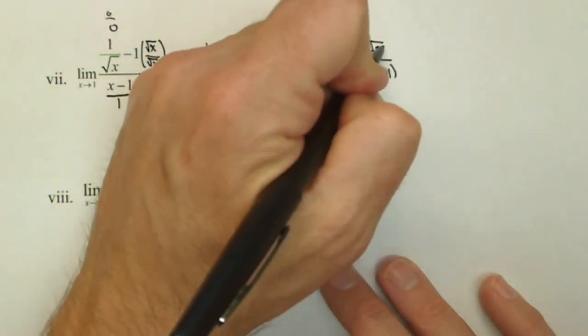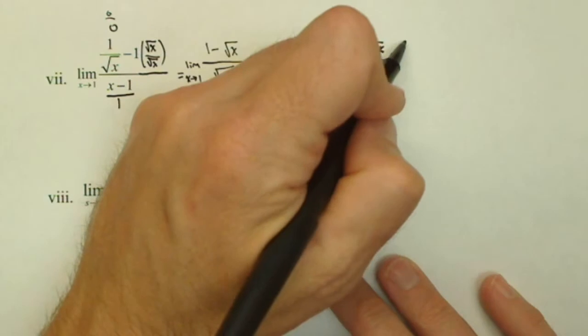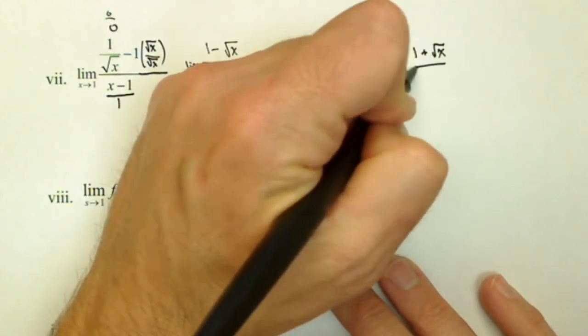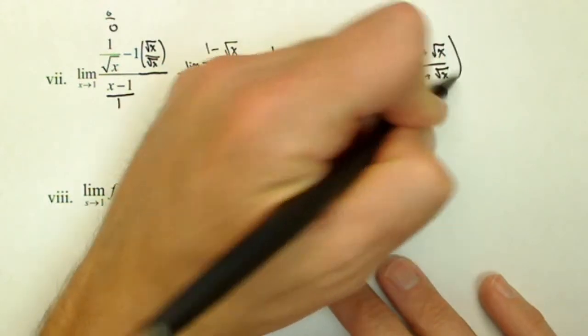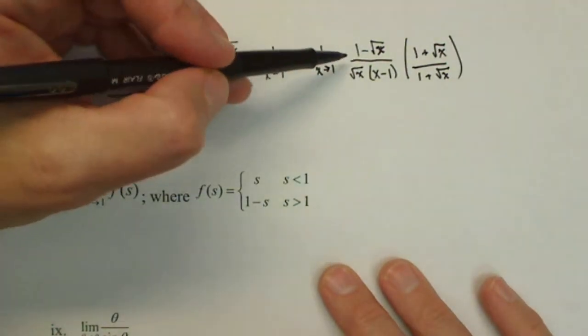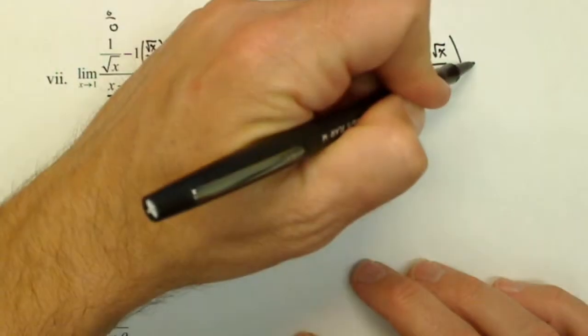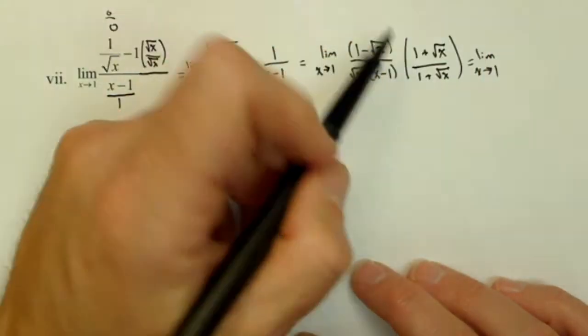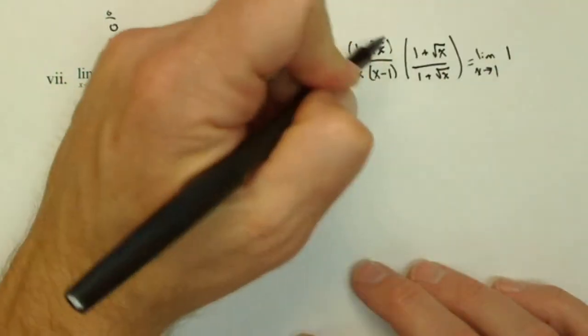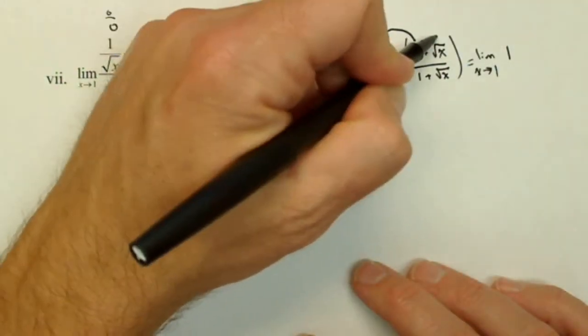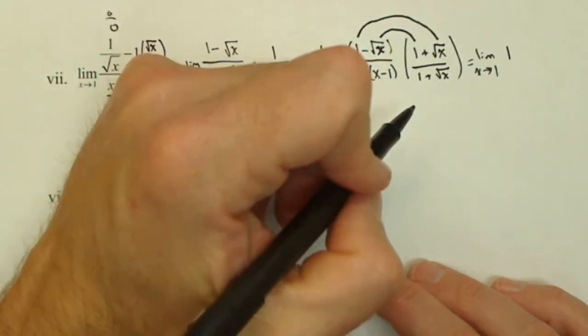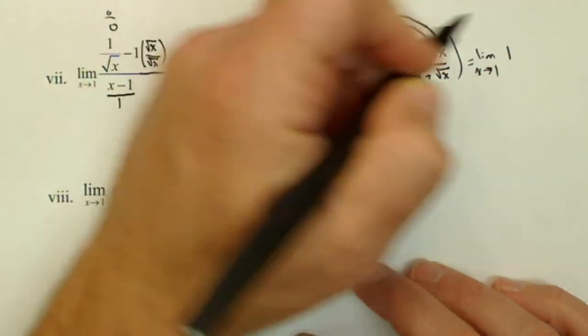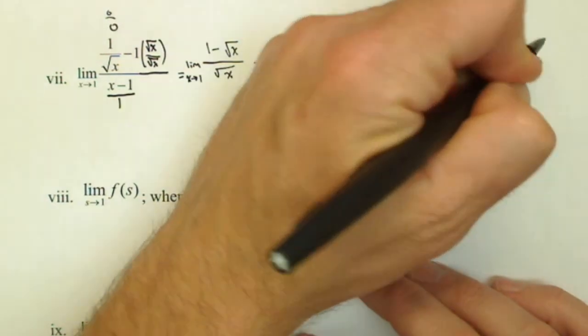Now, a lot of times when we see this with the 1 minus rad x, something we might want to try is multiplying by the conjugate. So I might want to multiply by 1 plus square root of x, and you'll see why here in a second. That radical might be what's causing the issue. So when I go to FOIL that numerator, look at what's going to happen. I get limit as x goes to 1. When I go to FOIL, I got 1 times 1, which is 1. Now, notice what happens here. I've got a negative square root of x plus a positive square root of x, so those actually cancel. And now I got negative rad x times a positive rad x, which is actually just a negative x.